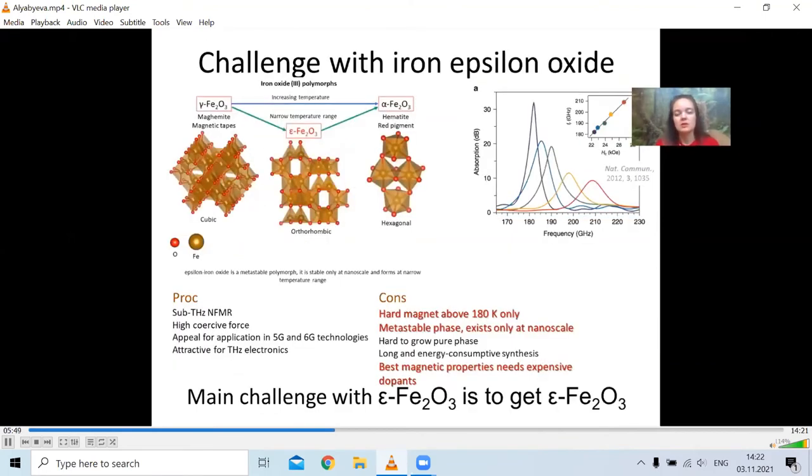But let's get back to the disadvantages. Once we were able to overcome the growth processes, we cannot do anything with the physics. And epsilon iron oxide is still a metastable phase. It exists only at nanoscales. You are not able to grow a single crystal. The other disadvantage is that to obtain the best magnetic properties, you need to use doping of rather expensive elements like rhodium, which also not really appeal for the industrial.